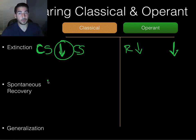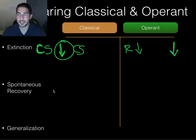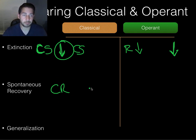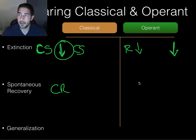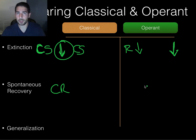Spontaneous recovery — sometimes behaviors come back. After extinction, a response might just spontaneously reappear. With classical conditioning, the conditioned response that was extinguished randomly reappears. With operant conditioning, same thing — you stopped cleaning the bathroom, but all of a sudden you feel the need or want to go clean the bathroom again.